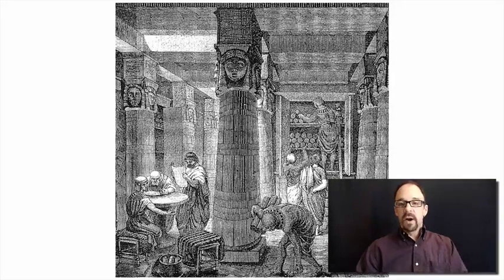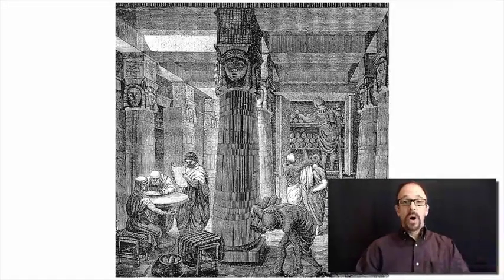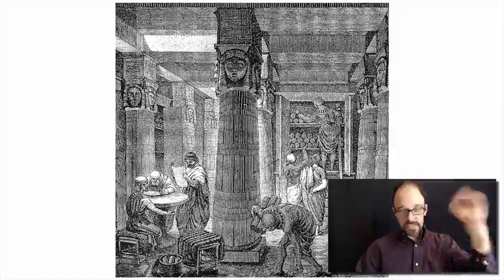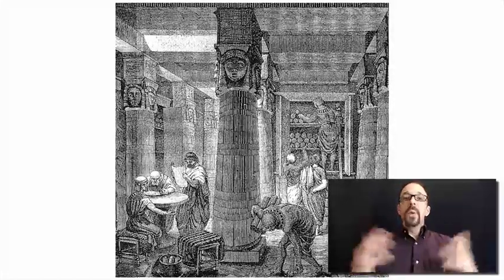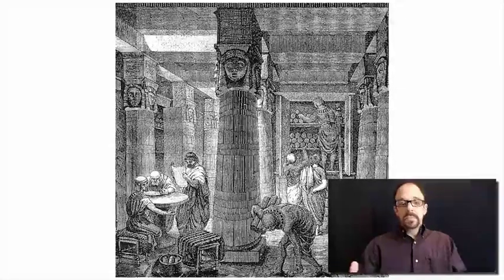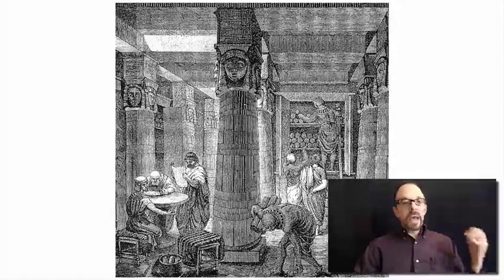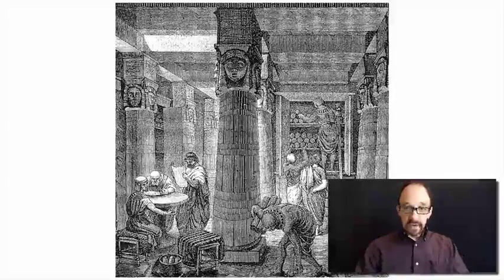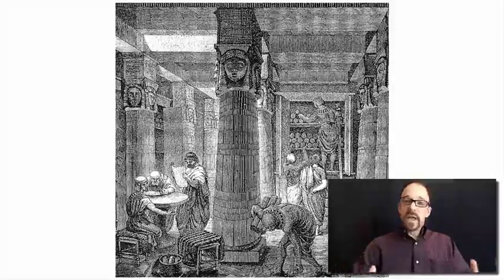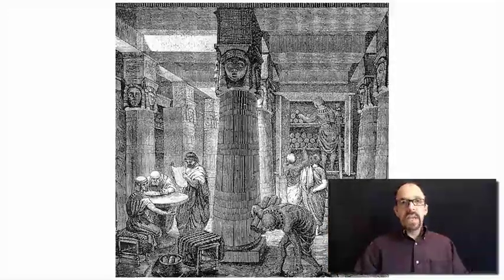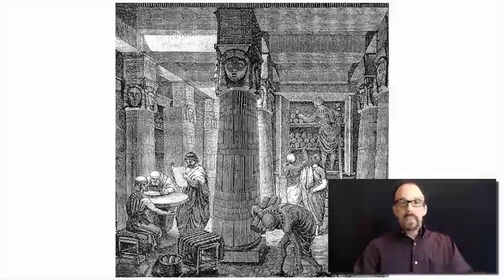The library at Alexandria wasn't the first library on Earth. I actually don't know what the first library ever was, but Alexandria was the first library that we have significant historical records about, even though a lot isn't known about Alexandria. The point is that library catalogs — or before they were called catalogs, they were called shelf lists — the first library catalog probably goes all the way back to the first library, because once you start getting a collection of a reasonable size, human memory starts to be insufficient to handle access.